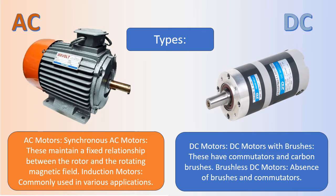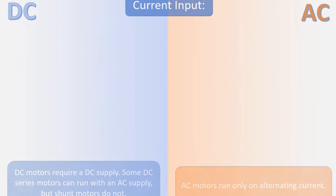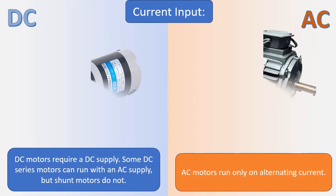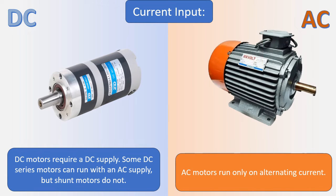Brushless DC motors have an absence of brushes and commutators. Regarding current input, AC motors run only on alternating current. DC motors require a DC supply. Some DC series motors can run with an AC supply, but shunt motors do not.